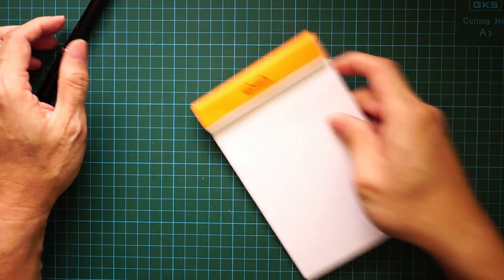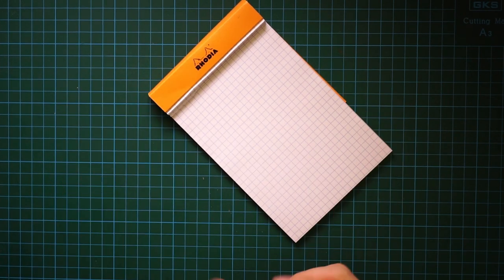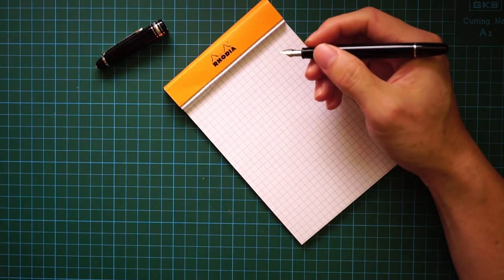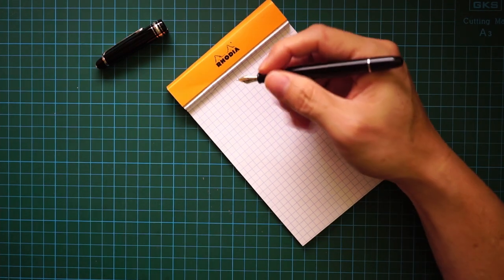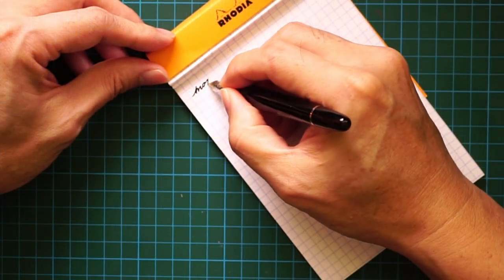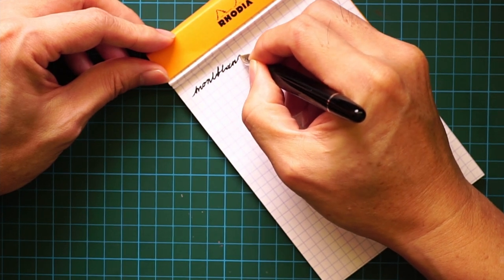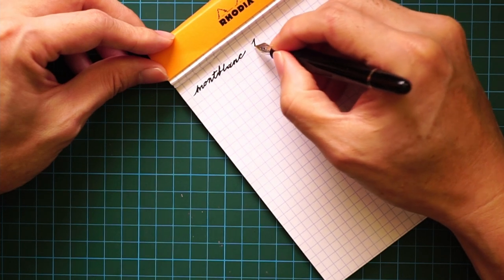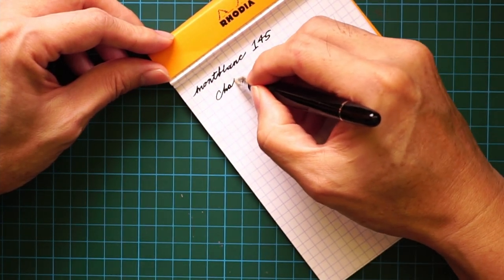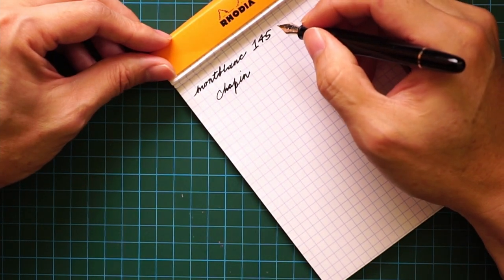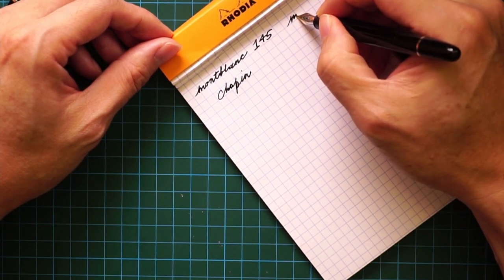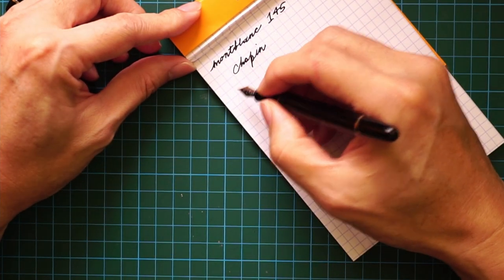So writing with the pen, just make sure that it's in the middle down here. Even though it's a medium, by the way, I've inked up this pen with Mont Blanc Mystery Black. I thought it was fitting to kind of ink this with a Mont Blanc ink. So this is the Mont Blanc 145. And this is the Chopin. It's in medium. Quick writing sample.